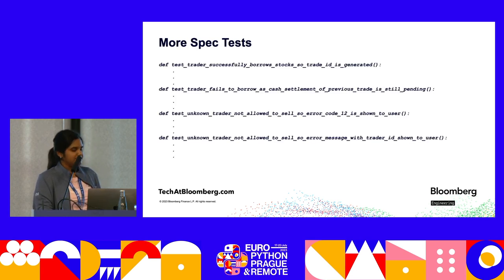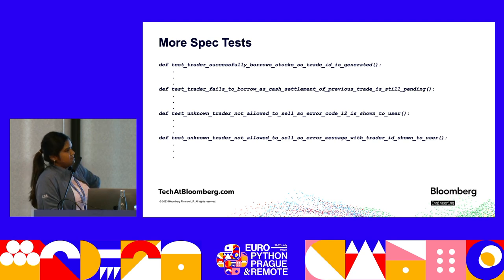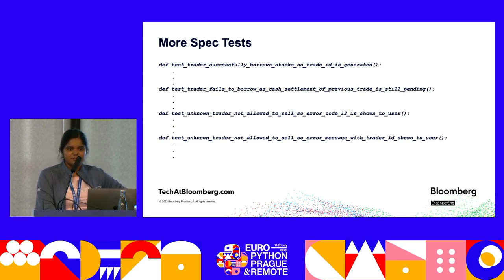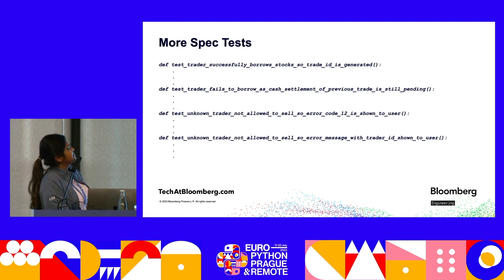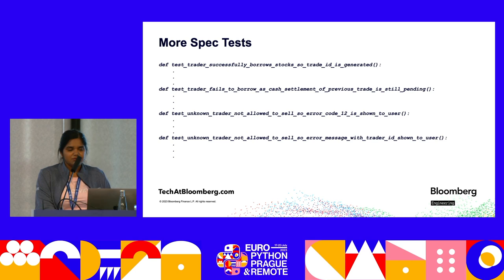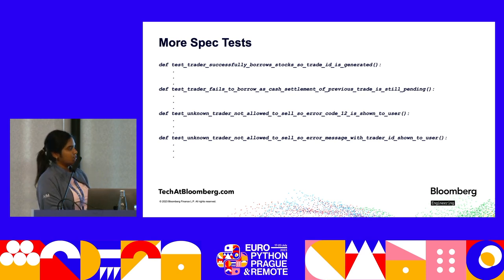Let's see some more specification tests. 'Test traders successfully borrow stocks, so the trade ID is generated' — this is the first successful BDD scenario, a happy case. When the booking is successful, a trade ID is generated, and this test checks whether the trade ID is generated. Looking at the bottom two tests: 'Test unknown trader not allowed to sell, so error code 12 is shown to the user.' Both tests cover a similar scenario but test different things — one checks the error code, the other checks the error message.